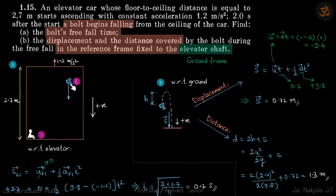S21, the displacement of 2 with respect to 1. For 1, 2 seems to be falling down. Let's consider the downward direction as positive. Then the displacement of 2 is plus 2.7. U21 is 0. Acceleration of 2 with respect to 1 is a2 minus a1. So a2 is g downwards, plus 9.8. A1 is 1.2 upwards. In our sign convention it will be minus 1.2. So a21 is a2 minus a1, which is 9.8 minus minus 1.2, times t squared.